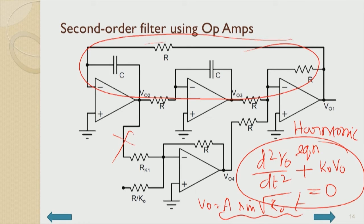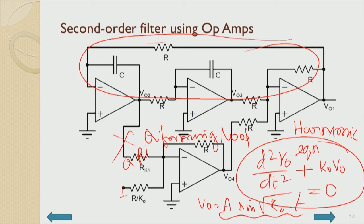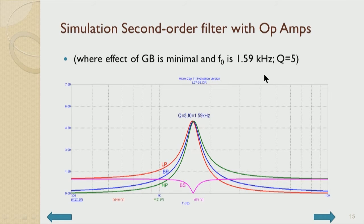Removing this connection and grounding the input simulates D squared V naught by DT squared plus K naught V naught equals 0, making Q infinity — this is why it is called the resonator block and the Q-forming loop. The Q-forming connection just adds a coefficient K1 of DV naught by DT. This R K1 determines the Q; if you put Q times R there, the circuit is designed for F naught equal to 1.59 kilohertz and Q equal to 5. This matches the earlier result with ideal integrators — this is the op amp version.